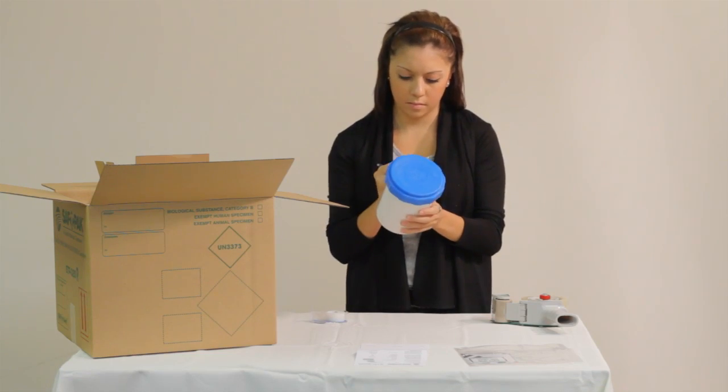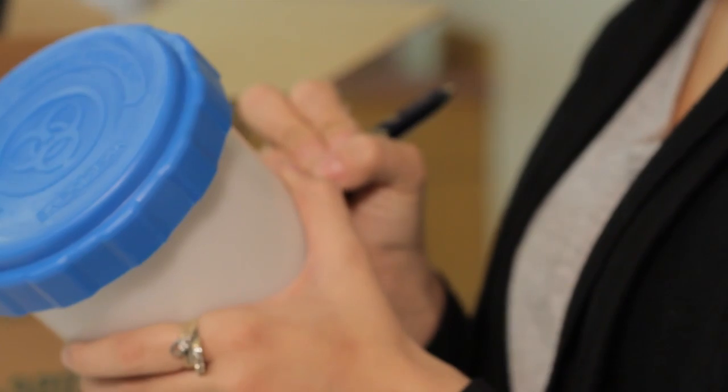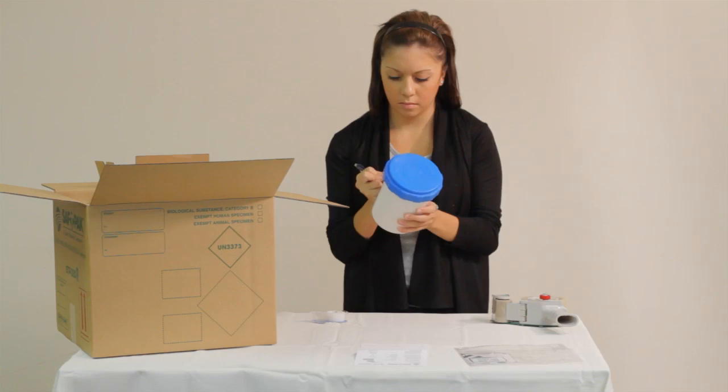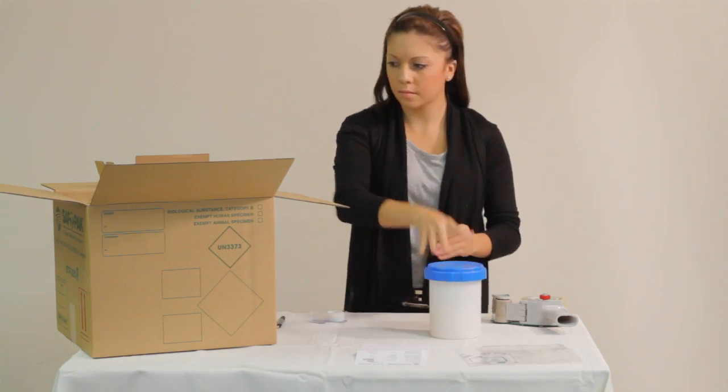Don't forget to fill out and include the itemized list of contents and place it between the secondary packaging and the outer packaging.